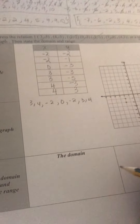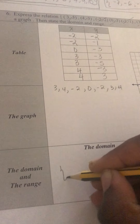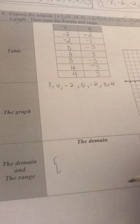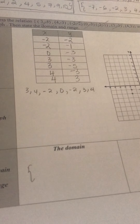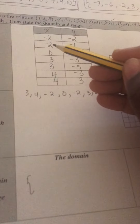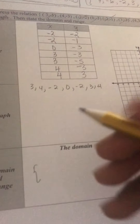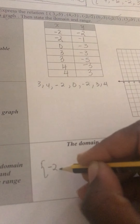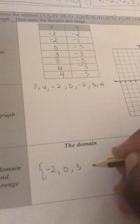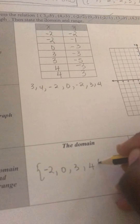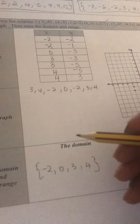Now they want you to write the domain. You have to remember your rule: you have to use the braces, you have to arrange from least to greatest, and there is no repeating. So I will not repeat negative 2. So: negative 2, 0, 3, 4 — this is my domain.